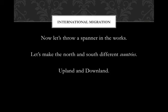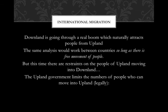Now we're going to throw a spanner in the works. Let's make the north and south different countries — Upland and Downland. Downland is going through a real boom which naturally attracts people from Upland. The same analysis would work between countries as within a country, so long as there is free movement of people. But this time we're going to put in restraints: the government limits the numbers of people who can move into Downland legally, using the force of the state — police, army, border controls — to impose enforced legal restrictions on the movement of people.